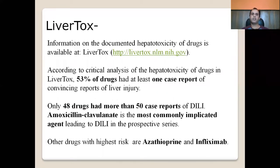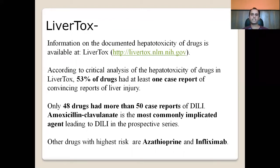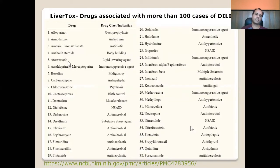Information on documented hepatotoxicity can be found at LiverTox, a website run by NLM and NIH. According to a critical analysis on LiverTox, 53 percent of drugs had at least one convincing case report of hepatotoxicity, and only 48 drugs had more than 50 cases of drug-induced liver injury. Amoxicillin-clavulanate is the most commonly implicated drug leading to drug-induced hepatotoxicity in prospective studies, with other high-risk drugs including azathioprine and infliximab.